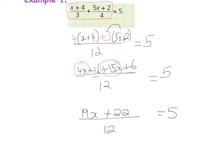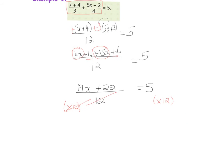What I do to one side I must do to the other, so I place a multiply by 12 on both sides. The divide by 12 and multiply by 12 cancel, and I'm now left with a linear equation — no fractions. So I have 19x plus 22 equals 5 times 12.